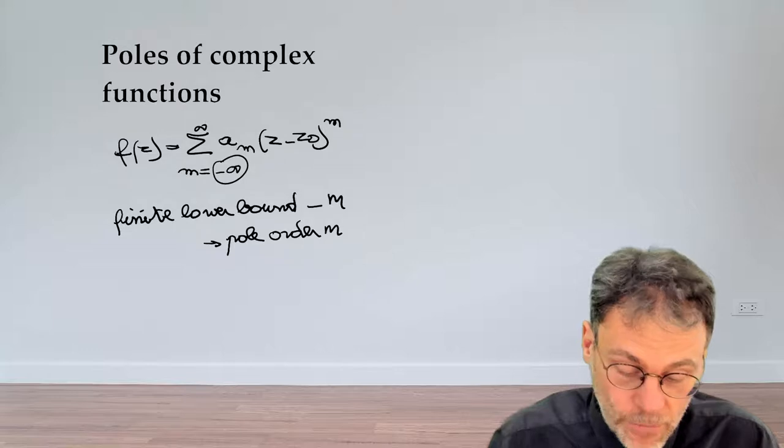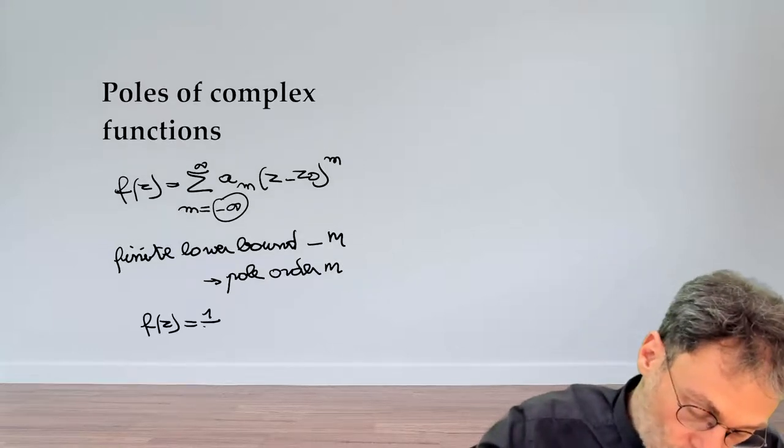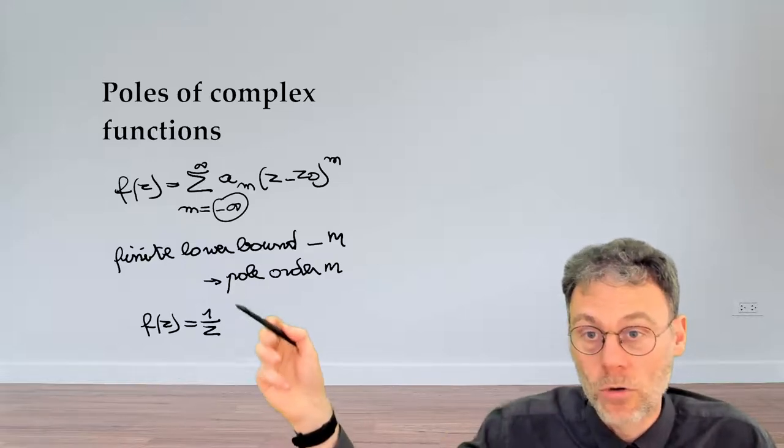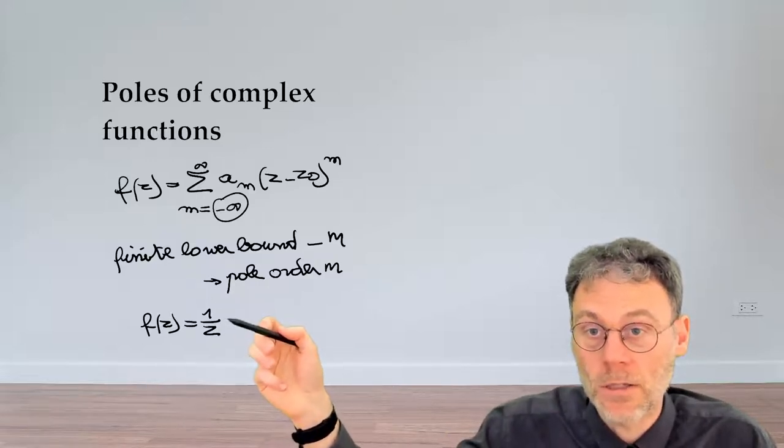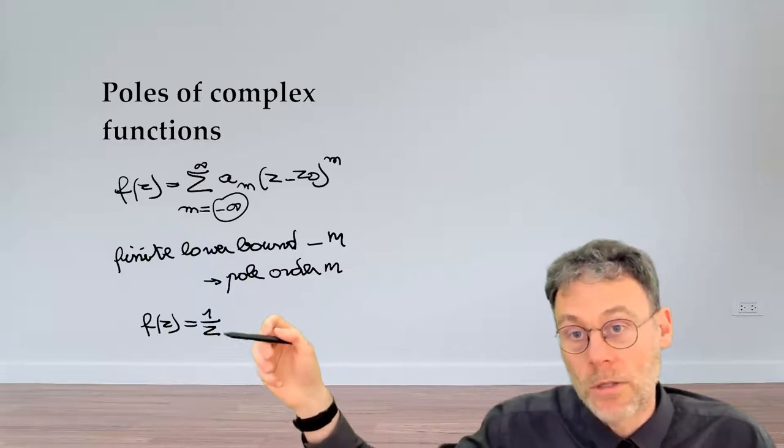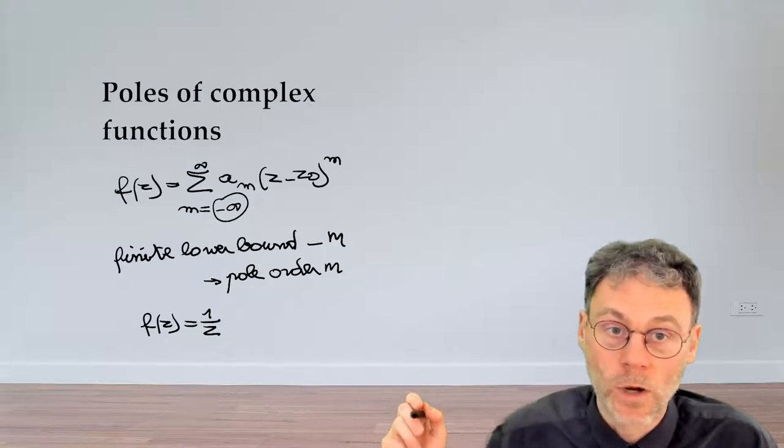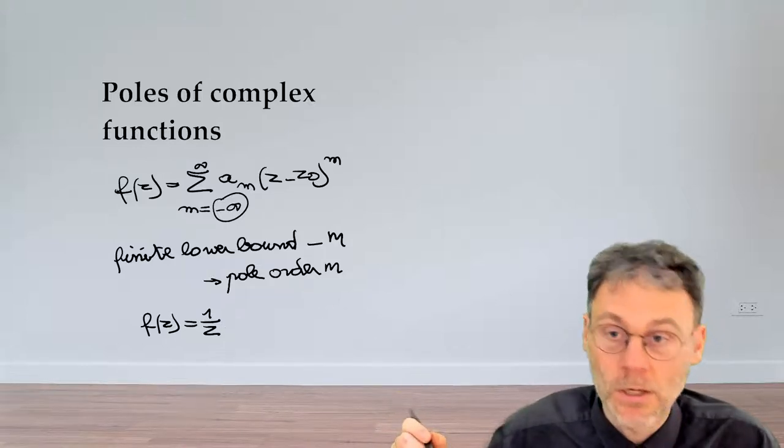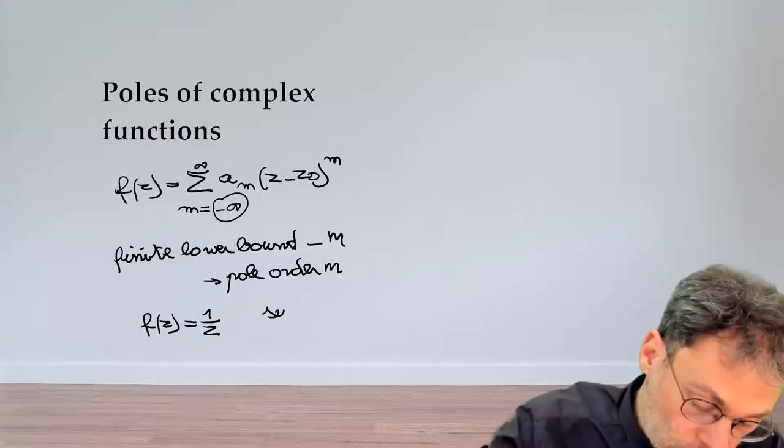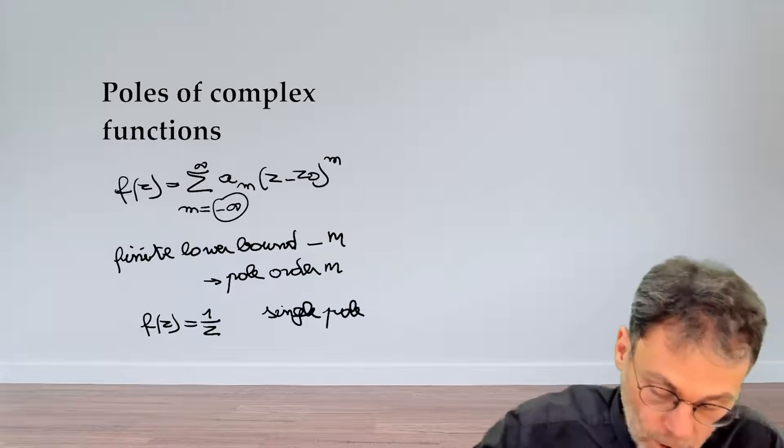So let's give a simple example. If you have the function f(z) = 1/z, in this case the function is very trivially also its Laurent series. So you can see here that if we develop that Laurent series around the origin, the most negative power of z that you find is z to the power of minus 1. In this case, we say that the origin has a pole of order 1 or also called a simple pole.